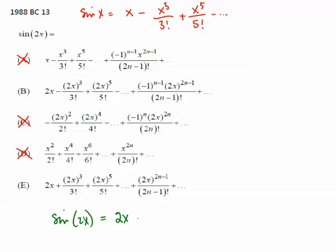Next, minus, we have 2x to the 3rd power over 3 factorial. And plus 2x to the 5th power over 5 factorial.